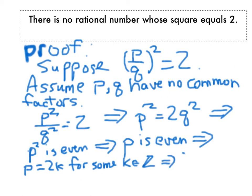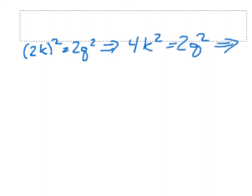And so now we have 2k squared equals 2q squared. So here we have 2k squared equals 2q squared. So that means if I square that out, 4k squared equals 2q squared, which means 2k squared equals q squared.